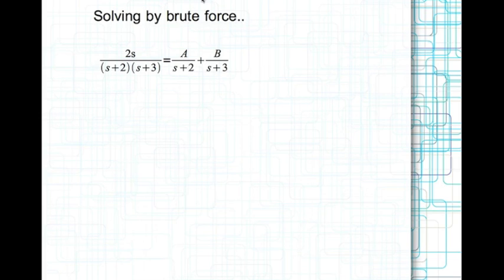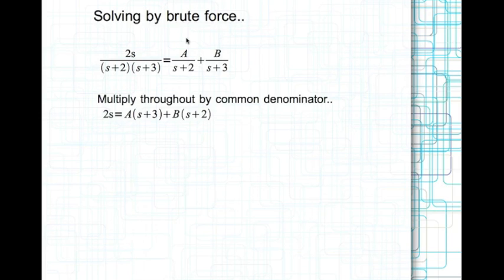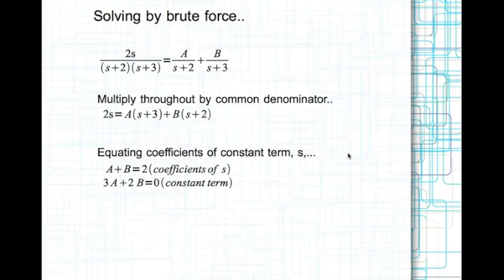The final step — especially used for terms corresponding to complex roots where there is no easy way to find the coefficients — is brute force. For example: 2s divided by (s plus 2)(s plus 3). Both roots are simple, contributing two terms. Multiply throughout by the common denominator (s plus 2)(s plus 3) to get an expanded expression. Then equate coefficients: the s term gives a plus b equal to 2, and the constant term gives 3a plus 2b equal to 0. Solving these two simultaneous equations gives b equal to 6 and a equal to minus 4.